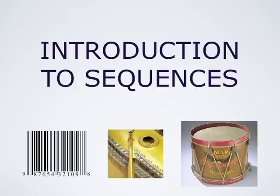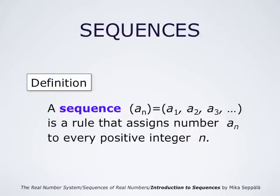Introduction to sequences. Sequences, finite or infinite, appear around us all the time. This is a mathematical point of view to sequences. A sequence aₙ is a rule that assigns a number aₙ to every positive integer n, so a sequence is an ordered list of numbers a1, a2, a3, and so forth.